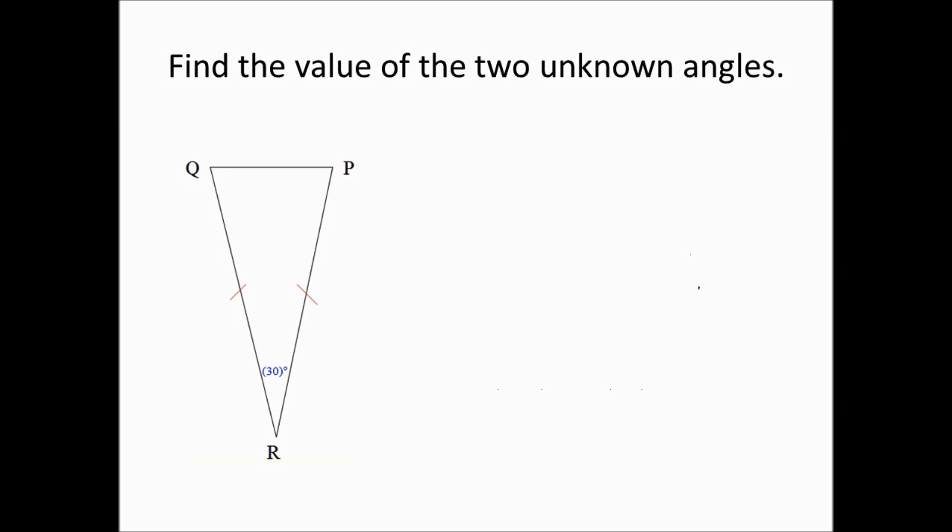Here's an example of the base angles theorem. We have a triangle in which two sides are congruent to each other, therefore we know that the angles opposite those sides are also congruent to each other. For angles P and Q, we're going to use X to represent the value of those angle measurements.